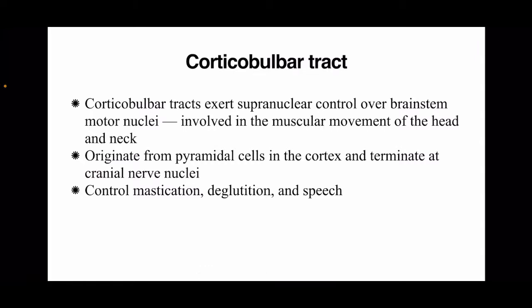Before we go into pseudobulbar palsy, we need to understand the corticobulbar tract. It is a tract that connects the cortex with the bulbar nuclei, and then via cranial nerves to the bulbar muscles. Corticobulbar tracts exert a supranuclear control over the brainstem motor nuclei and are involved in the muscular movements of the head and neck. They originate from pyramidal cells in the cortex, terminate in various cranial nerve nuclei, and are essential for mastication, deglutition, and speech.